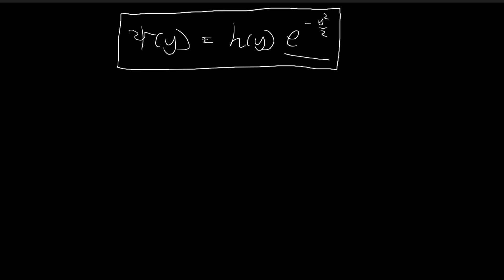So now we're going to set off with this guess — that xi is going to look something like h of y times e to the power of negative y-squared over 2. If we want to find our solution, if we want to find an expression for xi, we can now shift our focus on finding what h of y should be. We don't know yet if xi will indeed look something like this, but eventually we will see that it does. So now we're going to focus on finding h of y.